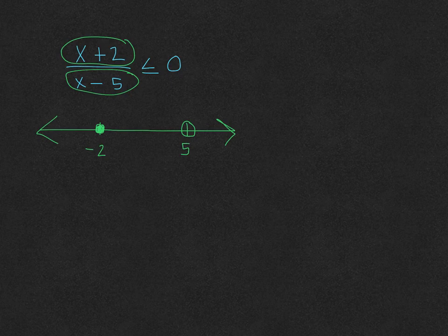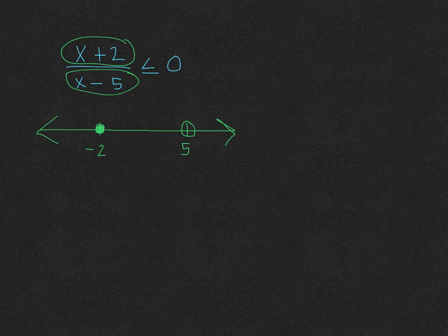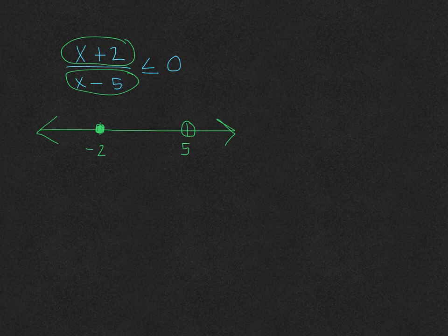Now after we get the 0s with the corresponding closed or open circles, the next thing that you want to do is that you want to test each region.